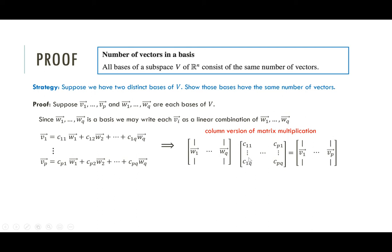In column-form matrix multiplication, we take the first column of coefficients and multiply by the matrix of W vectors. That gives the linear combination equaling V1. Similarly, the second column of coefficients multiplied by the matrix of W columns gives V2, all the way to the last column giving VP. So this first matrix has the column vectors W1 to WQ as its columns, the second matrix contains the coefficients, and the last matrix has the V basis vectors as columns.